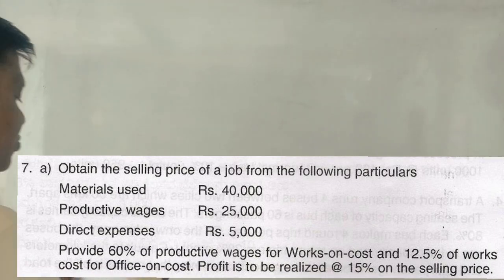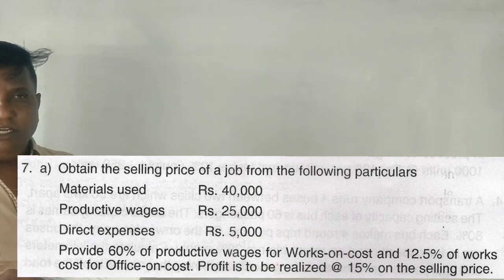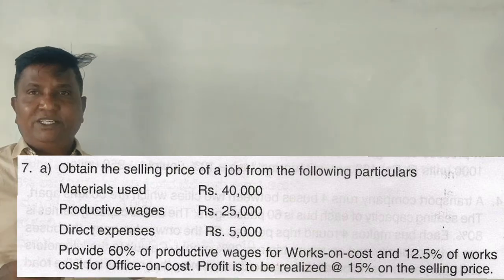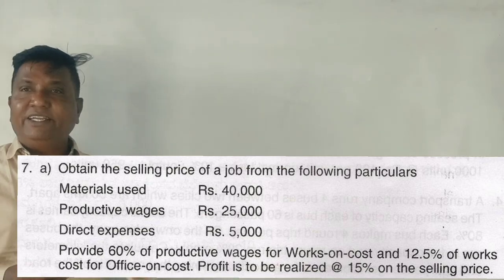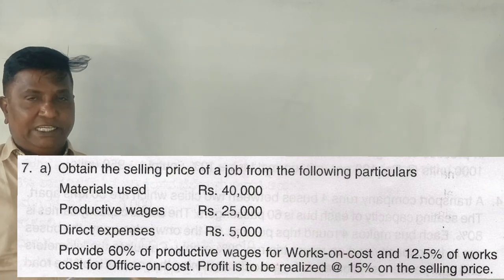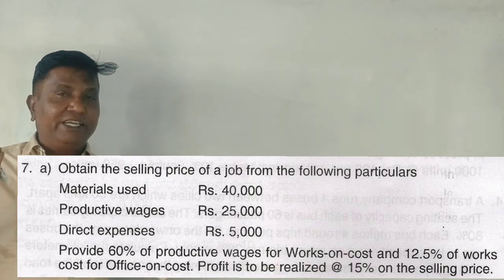Guys, job costing in 2018, section C is 14 marks, 7A, 7B, 7A, what is it?